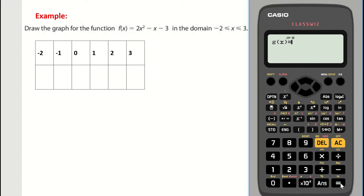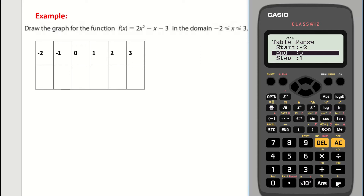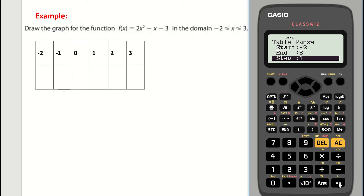Press equals to save the function. A second function g(x) appears — since we only have one function, press equals to skip it. The table range screen appears. Type minus 2 for the start and press equals, then type 3 for the end and press equals. The step value controls the increment — keep it as 1 to go up in units of one, or type 0.1 for smaller steps. Press equals when done.